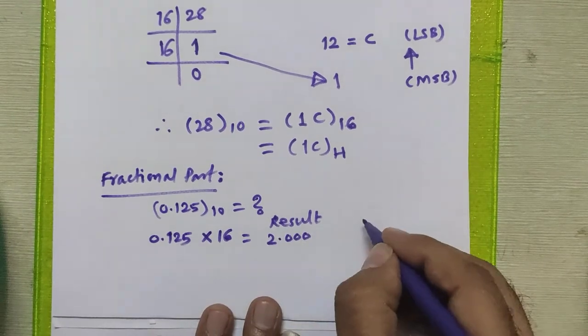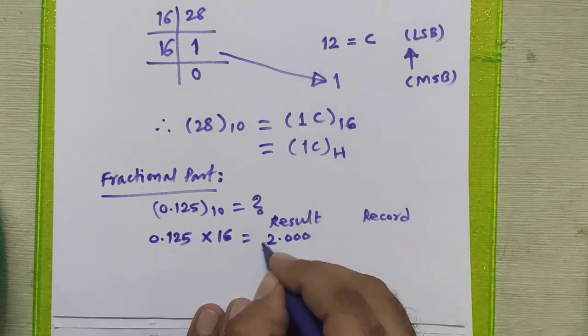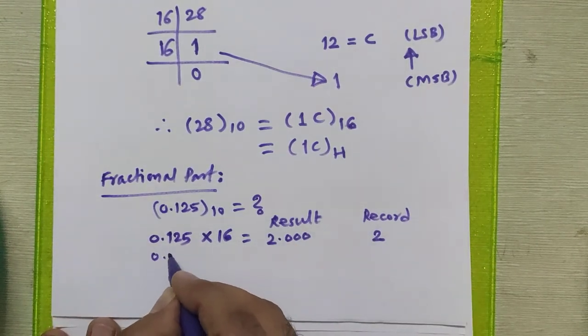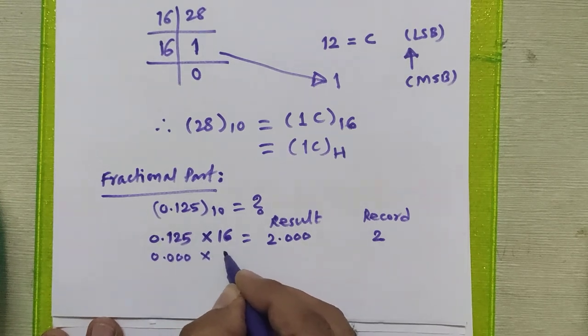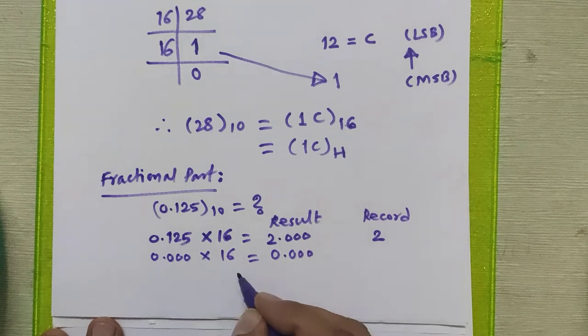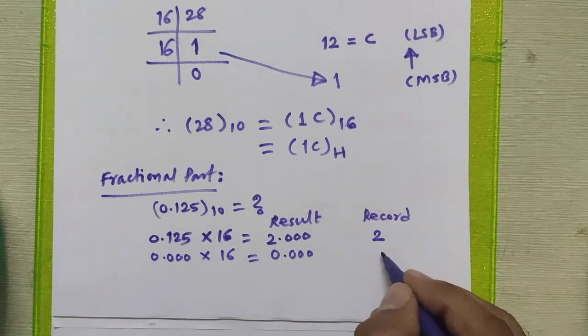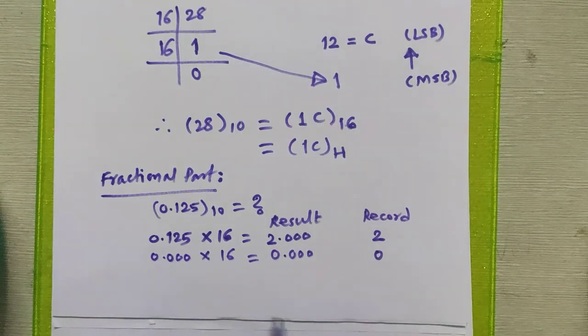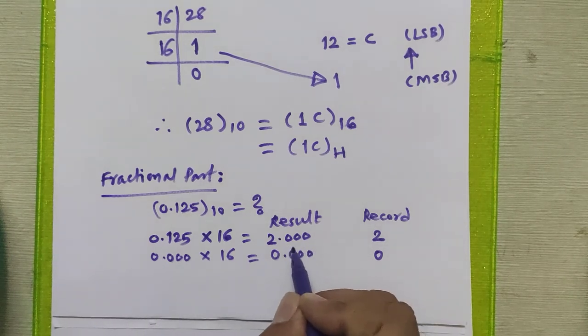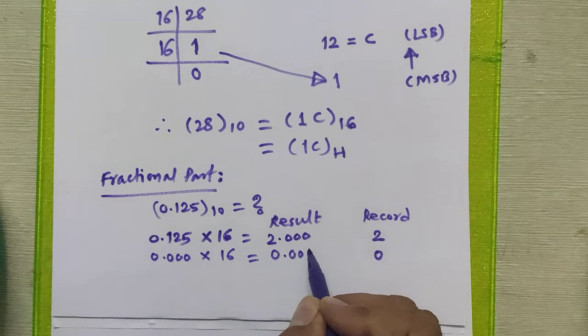We record the integral part from this result, which is 2, and carry forward the fractional part for further multiplication. In the next step, 16 into 0 is 0.00. We continue this process till the fractional part becomes 0, but in the first step itself we got 0, so we can stop here.